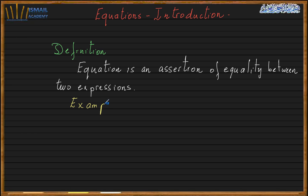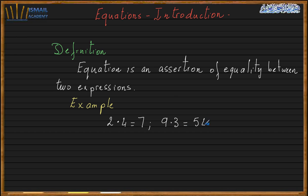It doesn't mean that if they have an equal sign, they are really equal. No — if I have two expressions and they have an equal sign between them, we call that statement an equation. For example, I can say that 2 times 4 equals 7 is an equation. Is it true or false? We don't care about that, because we have an expression, another expression, and an equal sign between them.